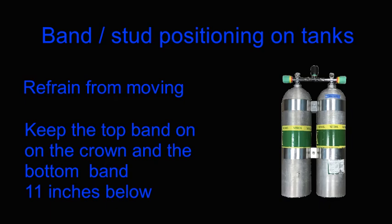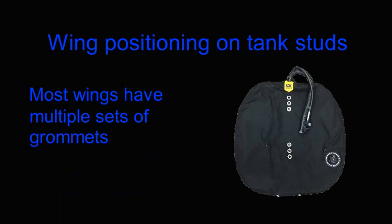I have chosen to illustrate a set of AL-80 tanks as this type of tank is the one that is most commonly available for rent around the world. The second static technique for achieving proper trim is to position the wing on the tank studs in different positions. Most wings have several sets of grommets that can be used to adjust the wing position.